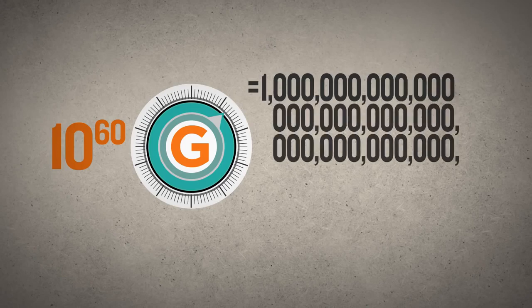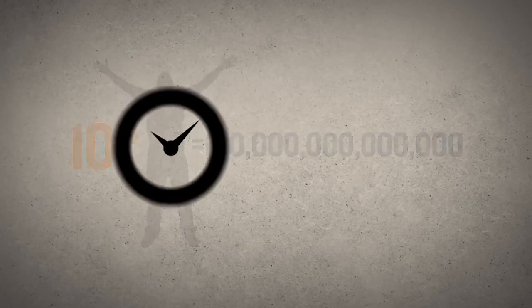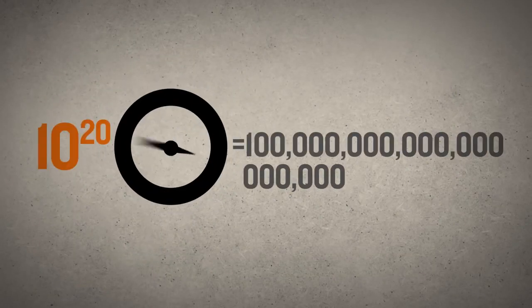To get a handle on how many tiny points on the dial this is, compare it to the number of cells in your body, or the number of seconds that have ticked by since time began. If the gravitational constant had been out of tune by just one of these infinitesimally small increments, the universe would either have expanded and thinned out so rapidly that no stars could form, or it would have collapsed back on itself — no stars, no planets, and no life.